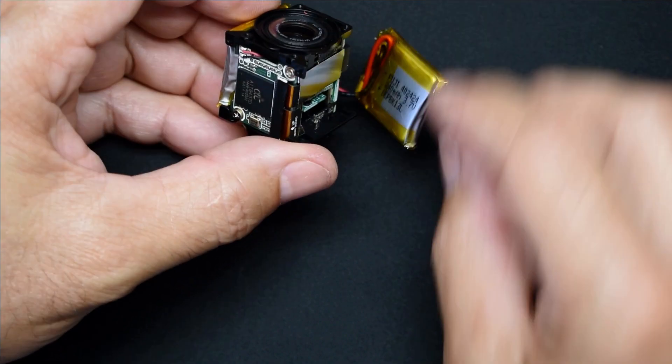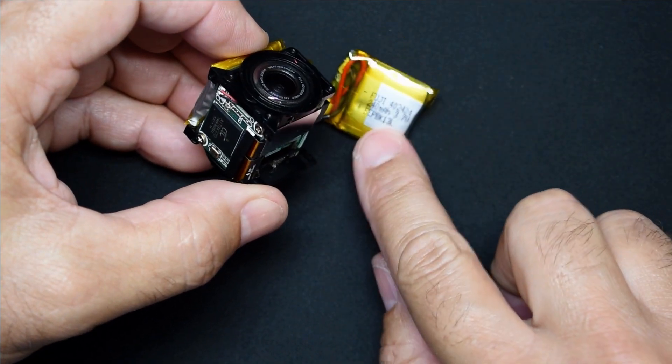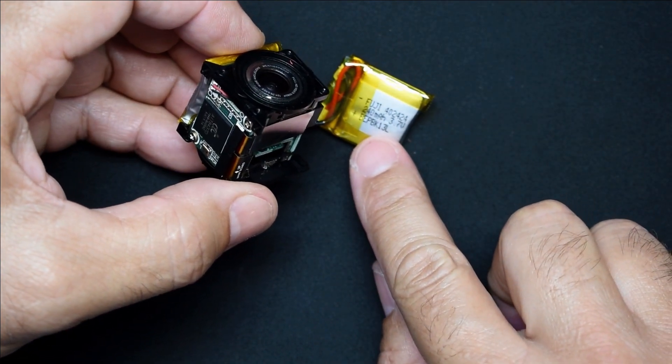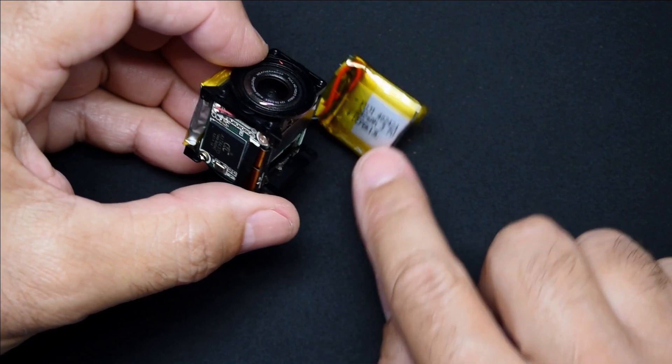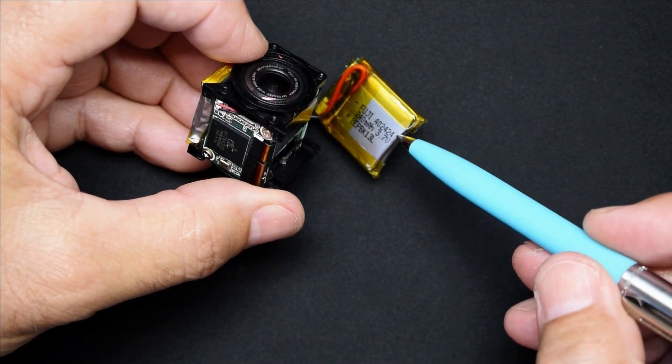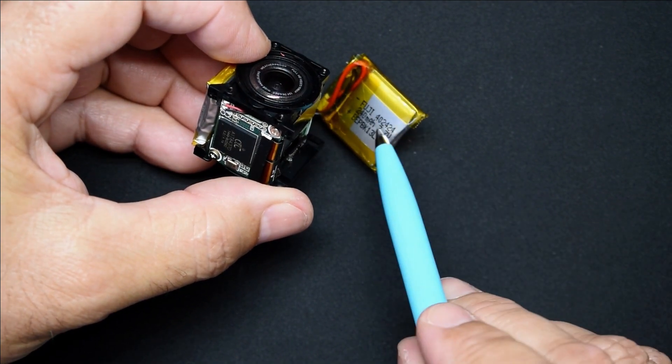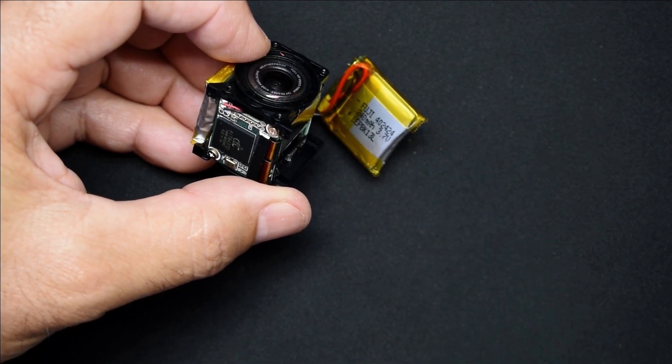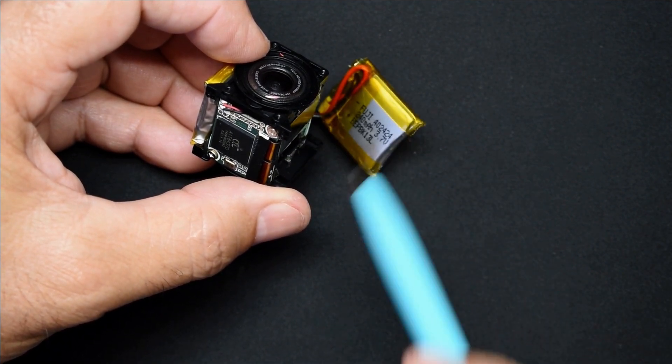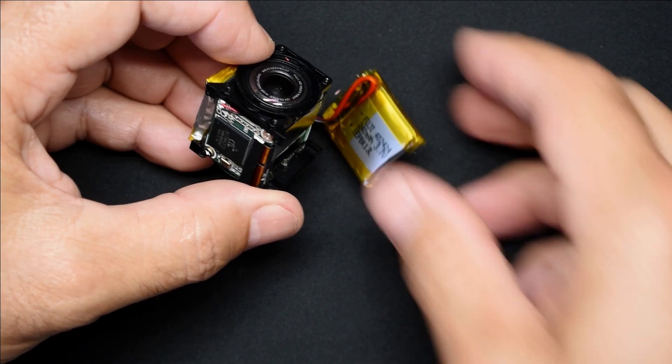So this is a 240 milliamp hour cell and it's a 402424. So 40 means that this cell is 4 millimeters thick, 24 millimeters by 24 millimeters. I'm not going to have the exact size so let's see what I can do here.